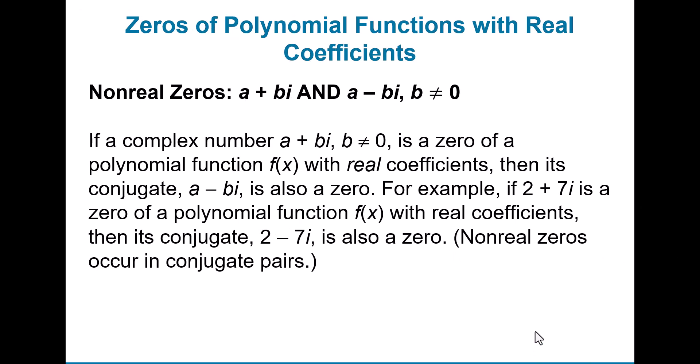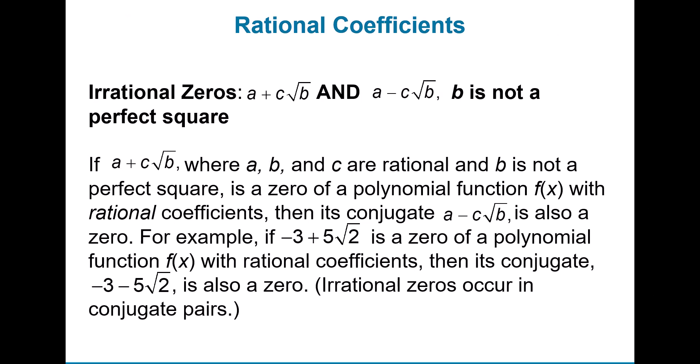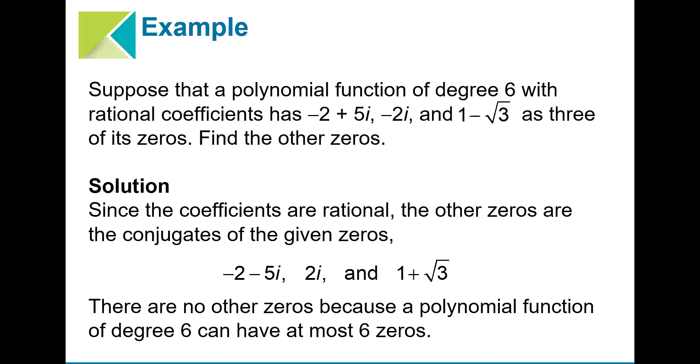For zeros of polynomial functions with real coefficients, if we have complex numbers, we can simply look at the conjugates for them. That's what it shows here with rational coefficients as well.